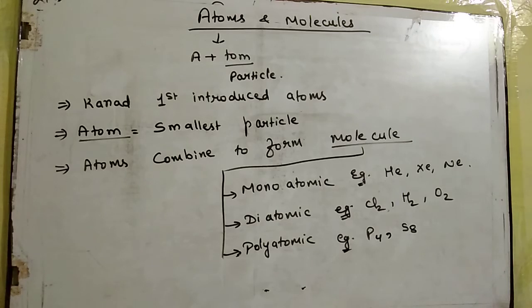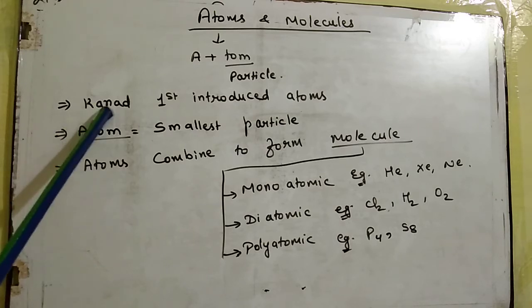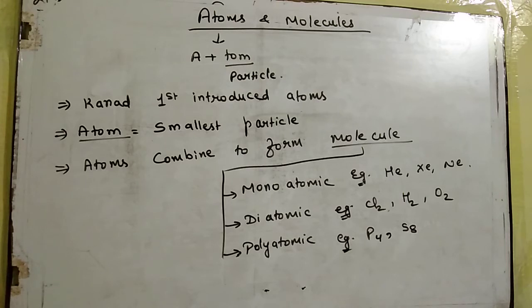So as the name suggests, atom, the word is made from two words that is A plus tom. Tom means the smallest particle, means aisa particle which cannot be divided further. So this term atom, this is the first time the term atom, Maharshi Kanad has taken this term and he has called it Karn. Karn means particle, smallest particle which cannot be divided further. It is the same name of Kanad.